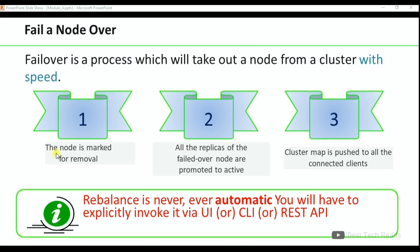These are the tasks that will happen during the failover. The node is marked for removal in the first step. In the second step, all the replicas of the failover node are promoted to active. And in the third step, cluster map is pushed to all the connected clients. Just for understanding purpose only I have mentioned these numbers. These things will happen in the backend in Couchbase.